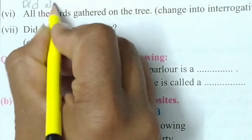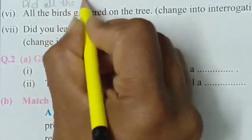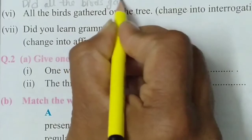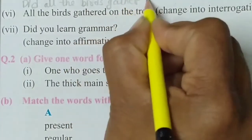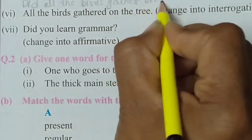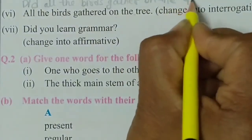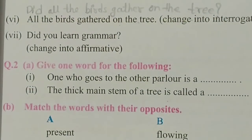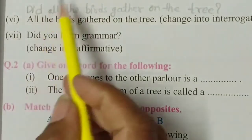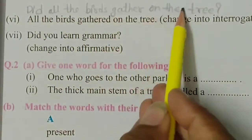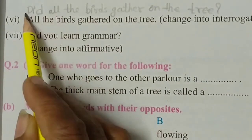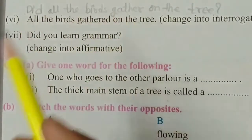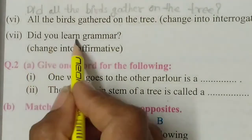The interrogative becomes: did all the birds gather on the tree? Put the question mark. When we use 'did', the verb is in its first form.